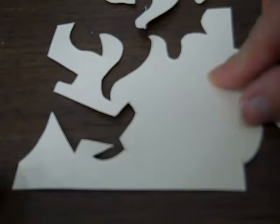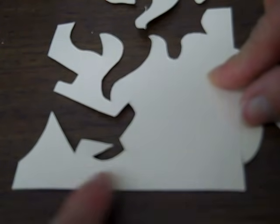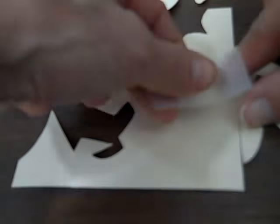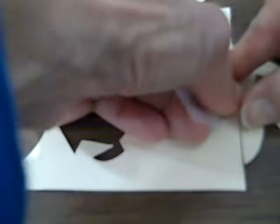You make sure that the space here equals the space here so that it's exactly in place. Once you're sure that you've lined them up properly, you're going to tape them down.